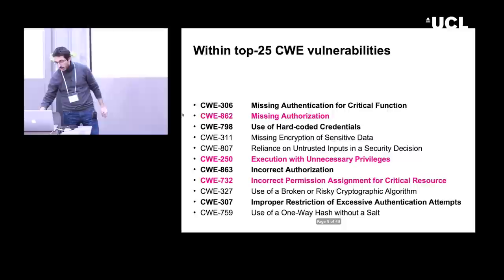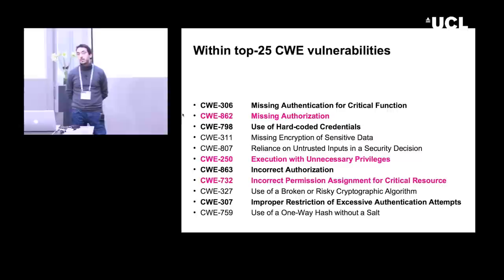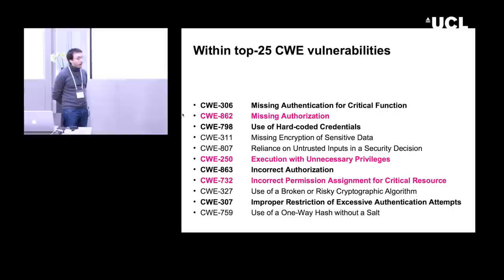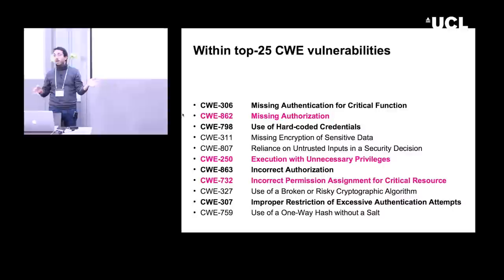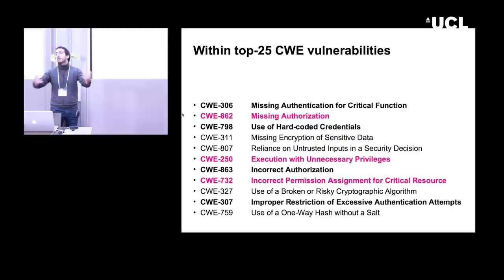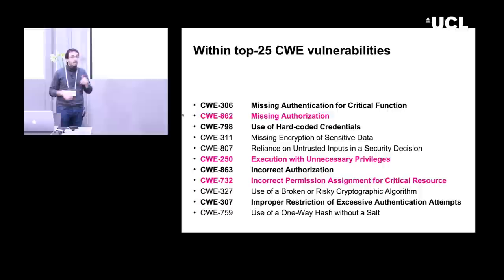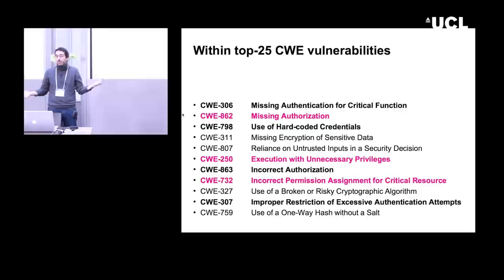This is a real problem. Looking at the top 25 Common Weakness Enumerations relevant to access control and authorization: the ones in pink are within the top 25 bugs out there. These include missing authorization — someone forgetting to do the access control check — execution with unnecessary privileges, and incorrect permission assignment for critical resources. That last one is a configuration mistake: not as glamorous as a buffer overflow, just someone forgetting a permission or getting it wrong, but it happens all the time.